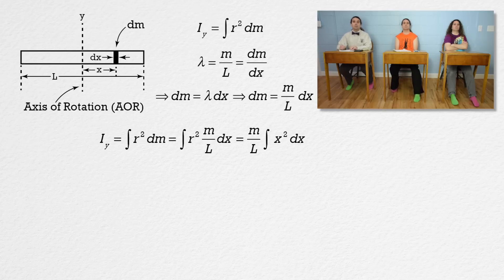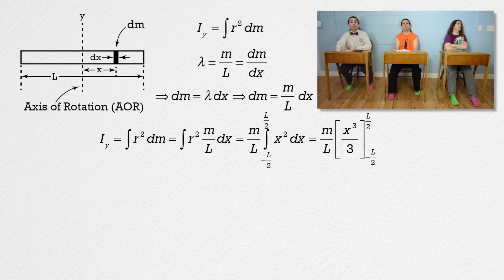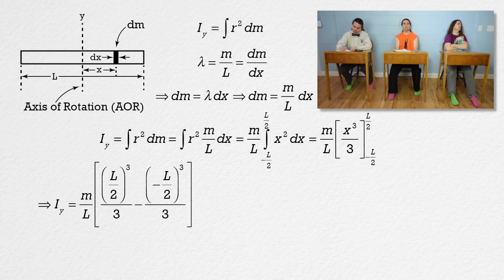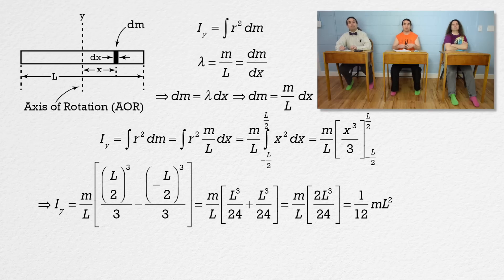Now we can put in the limits for the integral. x varies from negative one-half L on the left side of the rod to positive one-half L on the right side. The integral of x squared with respect to x is x cubed over three. Substituting in our limits and cubing both plus and minus L over two, we get L cubed over 24 plus L cubed over 24, which is 2L cubed over 24. The L cubed over L simplifies to L squared. Therefore, the moment of inertia of a uniform rigid rod about its center of mass is one-twelfth times the mass of the rod times the length of the rod squared.